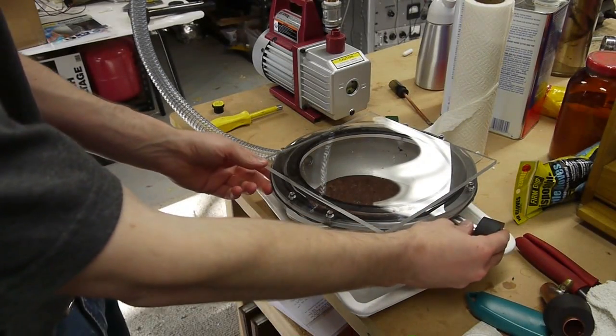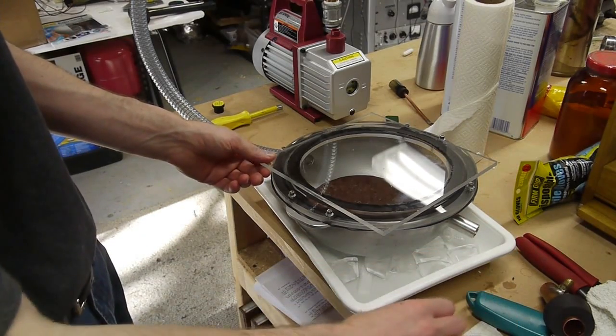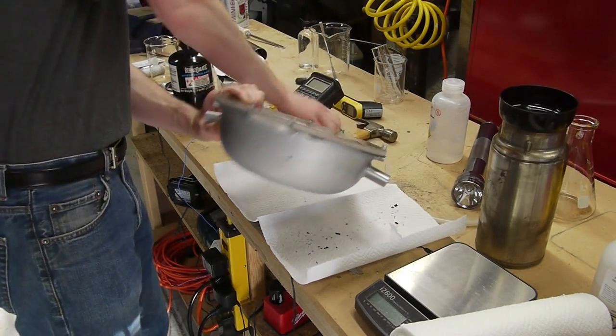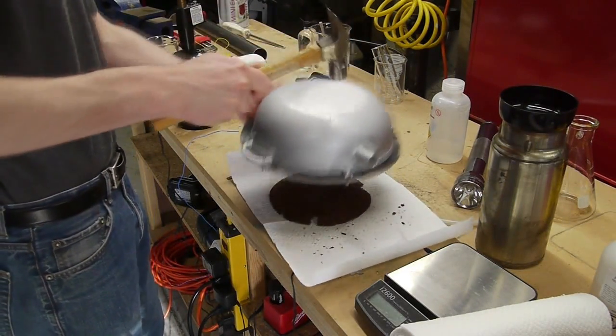So after a while, I very carefully let the air back into the chamber. And then to de-mold it, I used a blowtorch just to heat up the backside of the metal container and then hit it with a hammer to knock all the chocolate out, which actually worked pretty well.